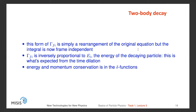In this case, matrix element M uses relativistically normalized wave functions and is therefore Lorentz invariant. Then d³p / (2π)³·2E is the Lorentz-invariant phase space for each final state particle — the factor of 2E arises from the wave function normalization. As you can see, this form of the decay rate is simply a rearrangement of the original equation, but the integral is now frame-independent. Also, Γ is inversely proportional to the energy of the decaying particle E_i, which is expected from the time dilation principle. Energy and momentum conservation are expressed through the delta functions.